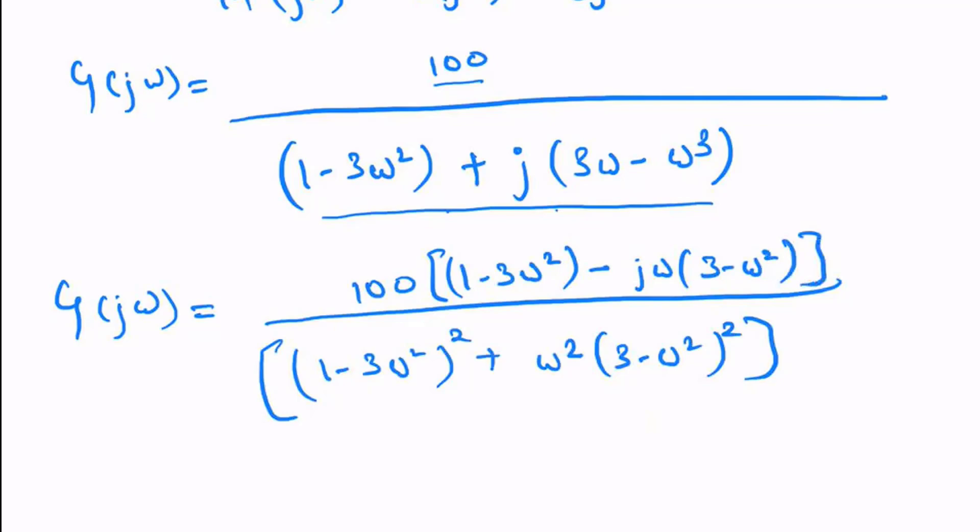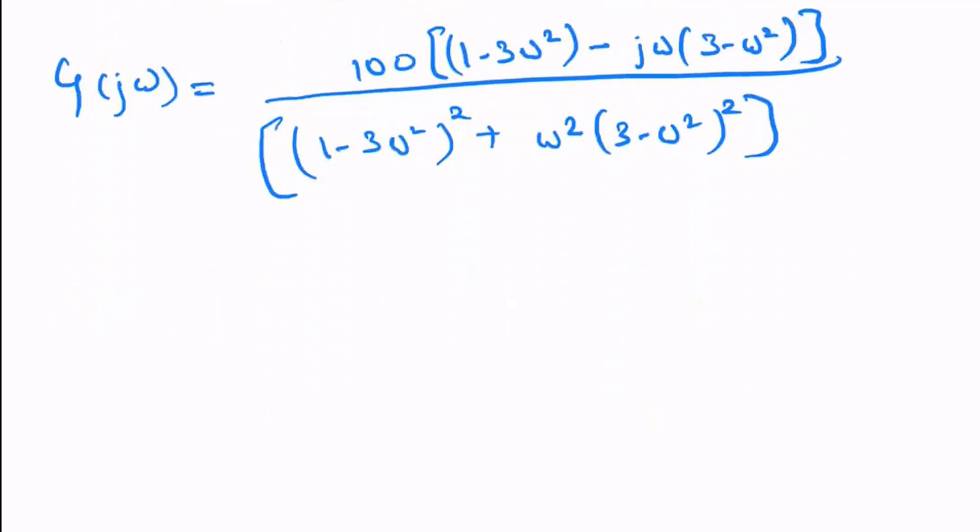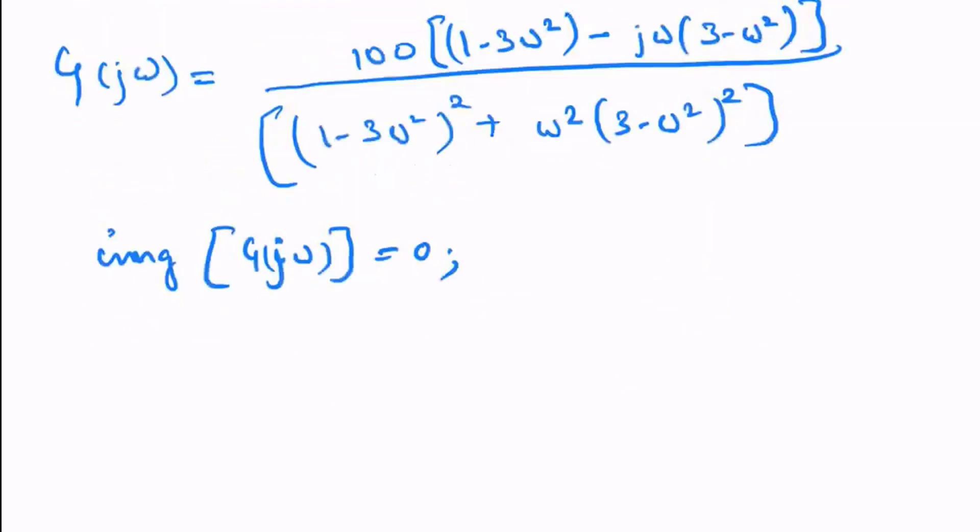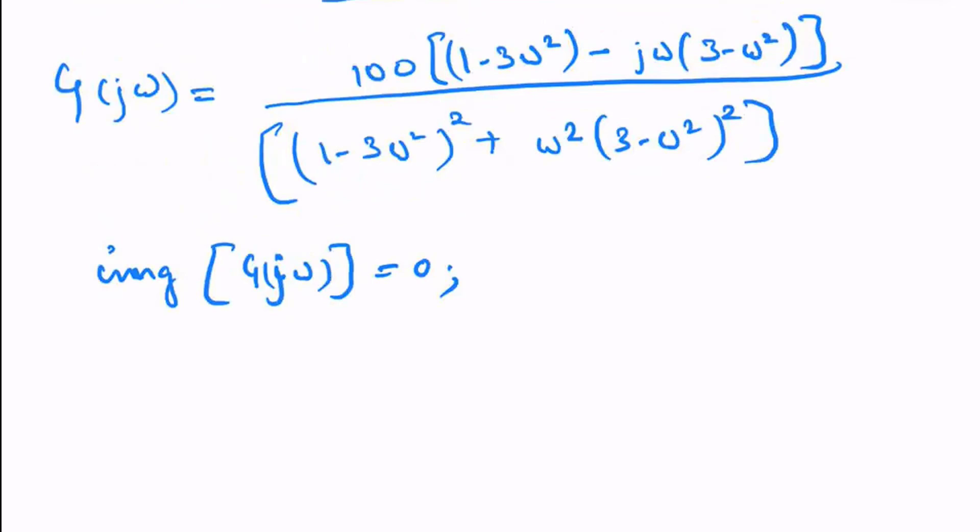For phase crossover frequency, we know the imaginary part equals zero: Im[G(jω)] = 0. This means the imaginary term in the numerator must be zero.